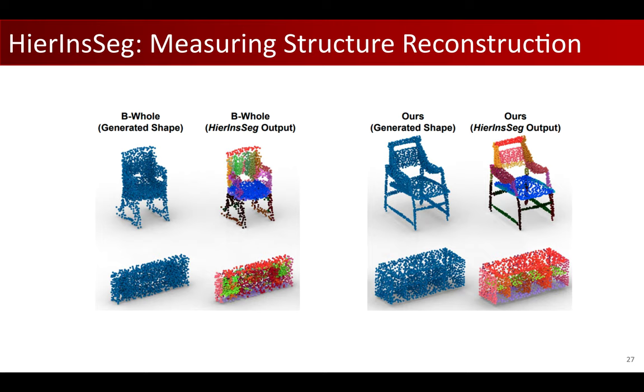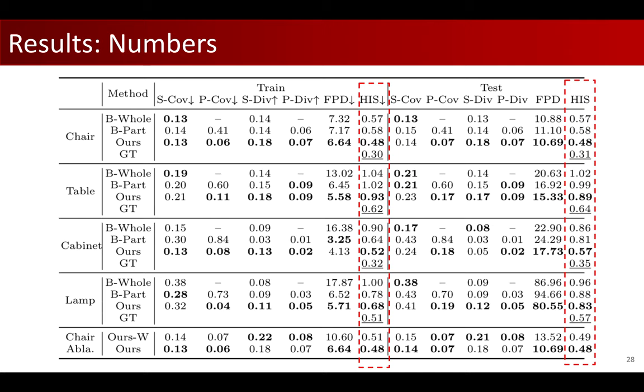Here, we show on the left that the shape point cloud generated by the B-whole baseline does not generate clear part details, so that our hierarchical instance seg fails to recover the input part-tree condition. While on the other hand, on the right figure, our method successfully produced exactly the same input part-tree condition. This shows that the proposed HierInsSeg is a good metric for evaluating the PT2PC task.